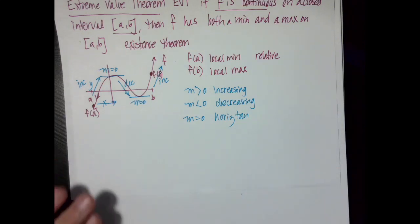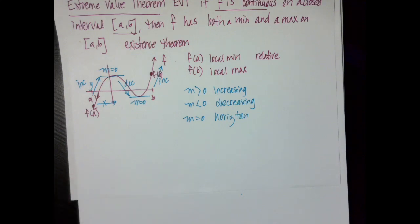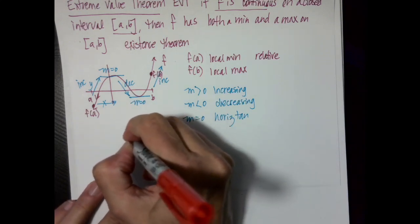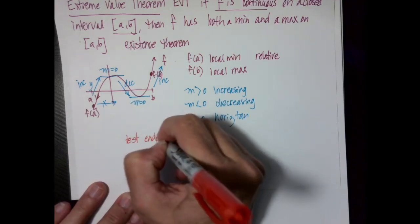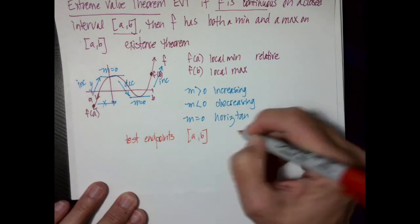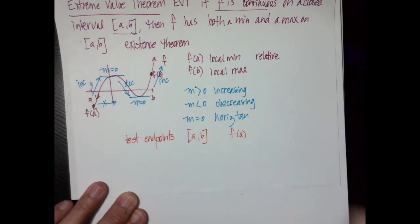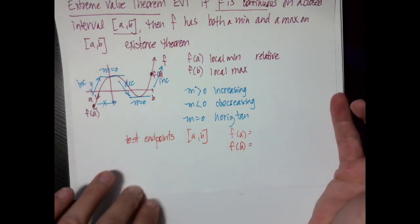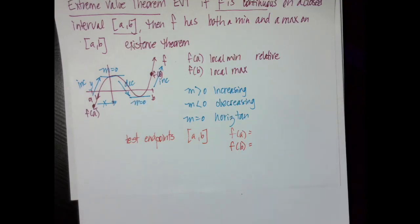One thing about the Extreme Value Theorem that most people tend to forget: I have to test the endpoints. Any time we have a closed interval, I actually have to show that I tested both endpoints before I can talk about the extreme values of the function.